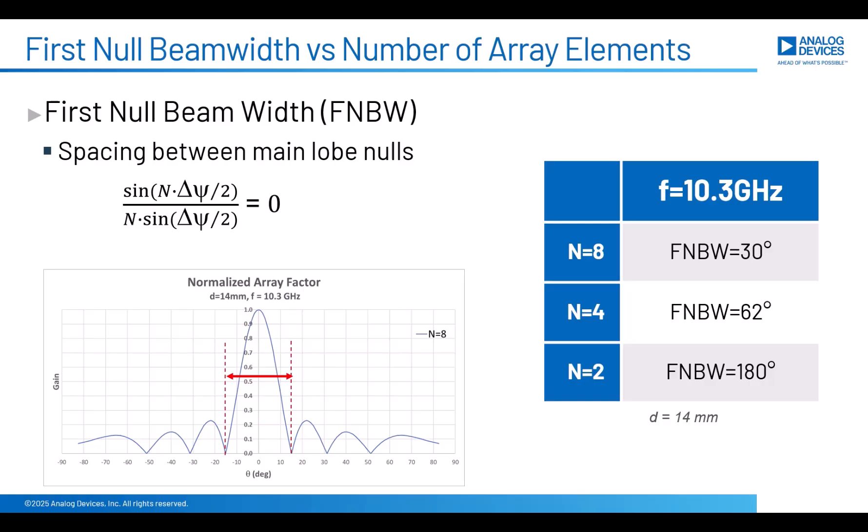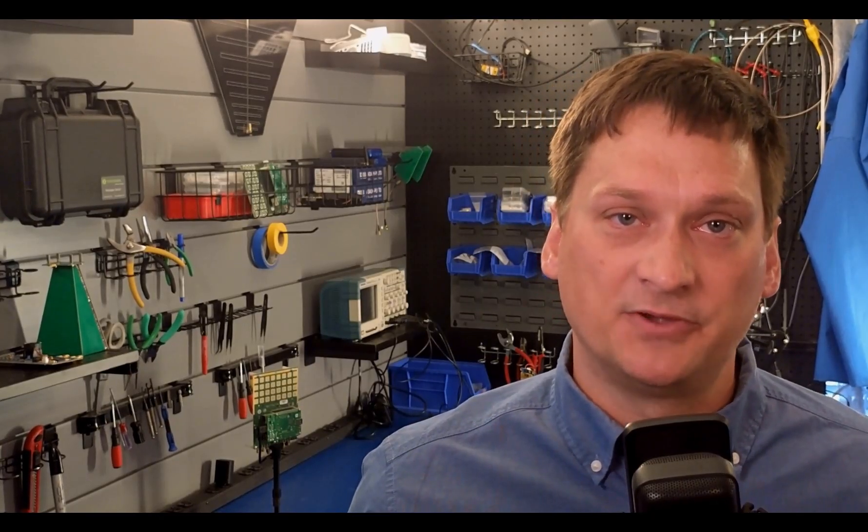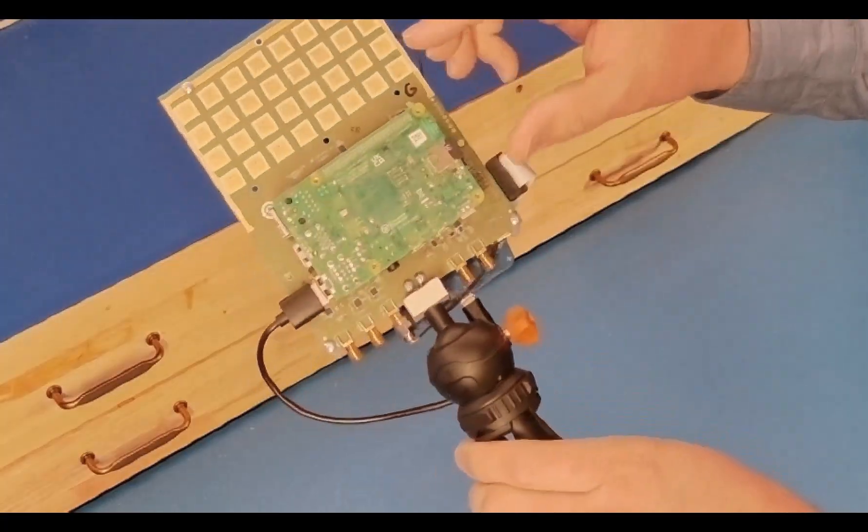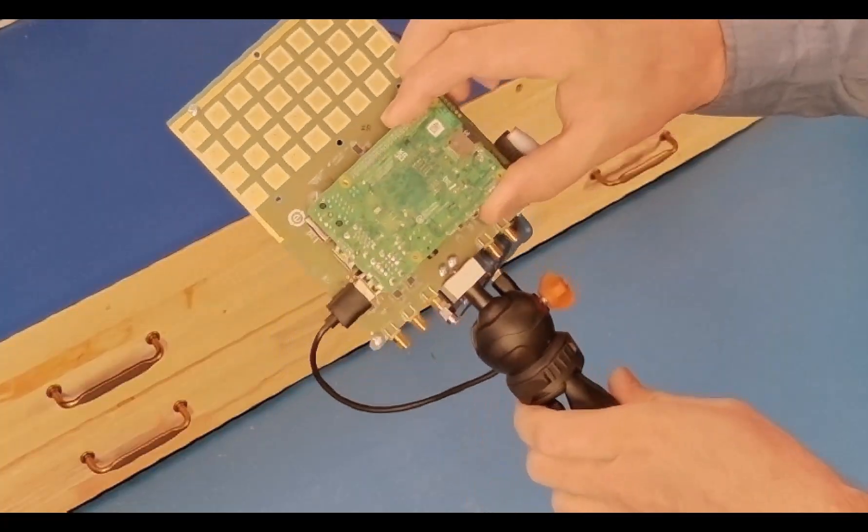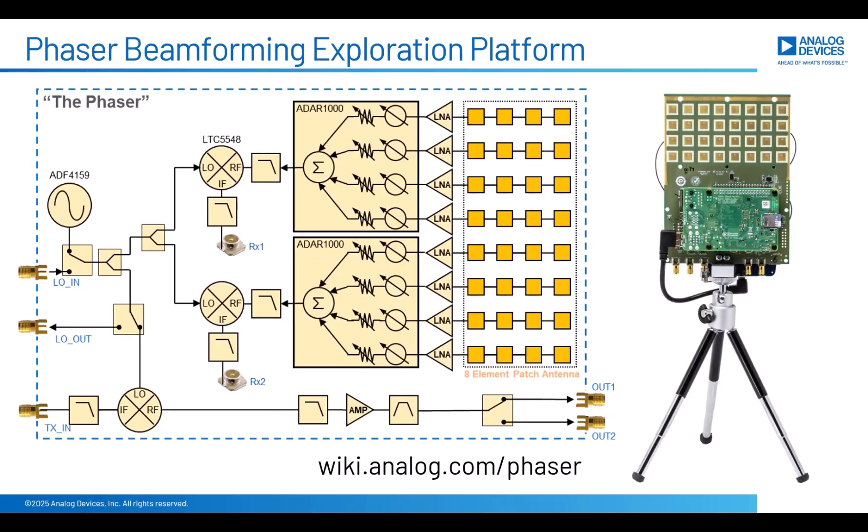So an 8-element array at 10.3 gigahertz has a 30-degree null-to-null spacing of the main lobe. And these are all measurements that we can make on our phaser hardware setup. So let's try that out now and see how close our calculations come to the actual measured values. So if you recall from last time, this is what our hardware looks like.